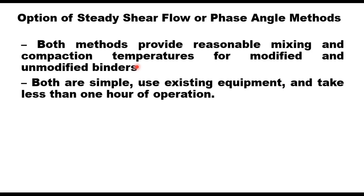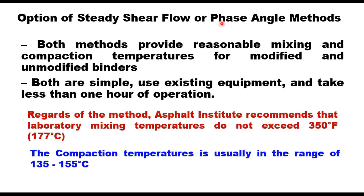Regarding which method to use between steady shear flow and phase angle, literature states that both methods provide reasonable mixing and compaction temperatures for modified and unmodified binders. Both are simple, use existing equipment (DSR), and take less than one hour to complete. Regardless of the method used, the Asphalt Institute recommends that laboratory mixing temperature should not exceed 350°F (177°C), and compaction temperature for the majority of binders is in the range of 135–155°C. It should be noted that these procedures do not apply to asphalt binders modified with ground tire rubber.